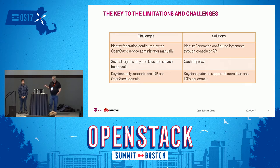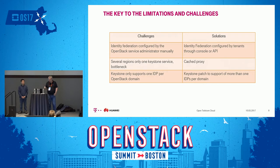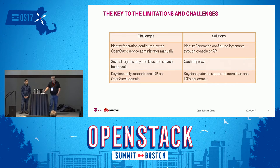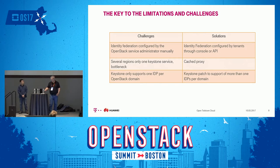The challenges we see are: first, we do not want our operations team to do Keystone configurations for every new identity provider added for each new customer — we want it configured through an API at the tenant level. Second, if you have several regions in your OpenStack, you still have only one single Keystone service that might become a bottleneck, and we worked around that by introducing a caching proxy for Keystone. And of course, we needed the ability to support more than one identity provider per Keystone domain, which was done by patching and extending Keystone.